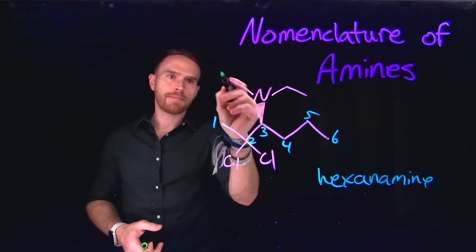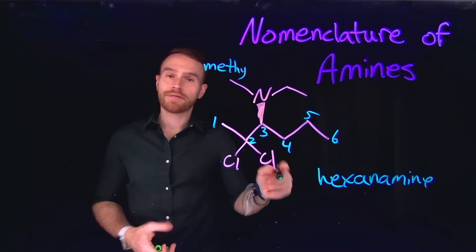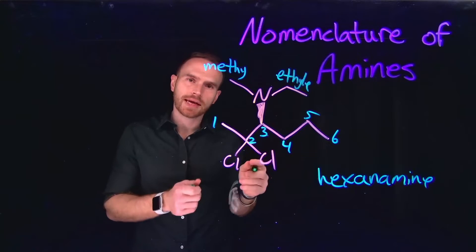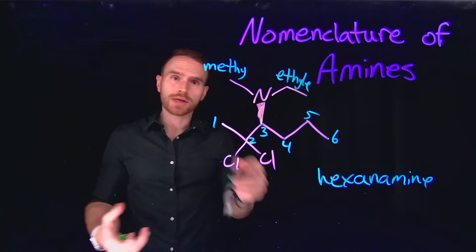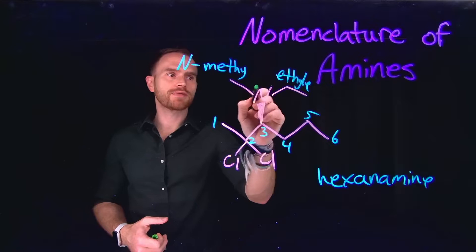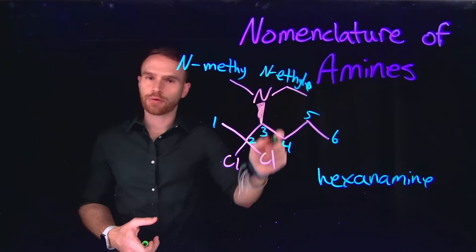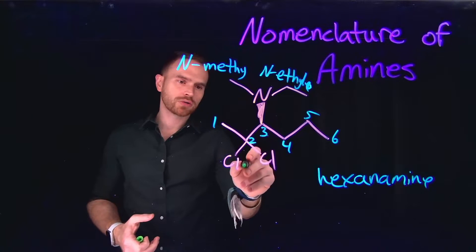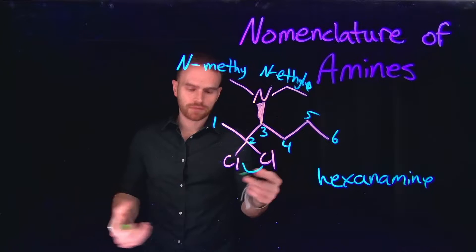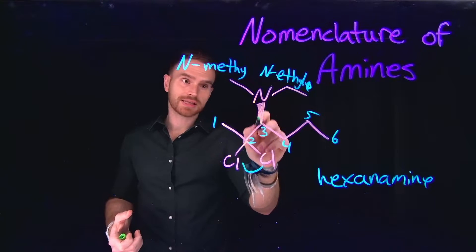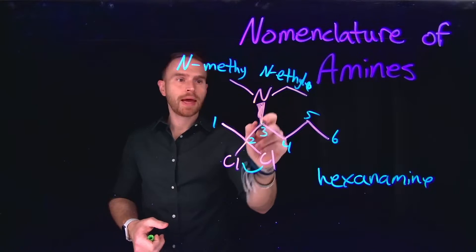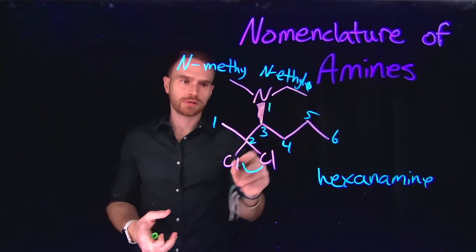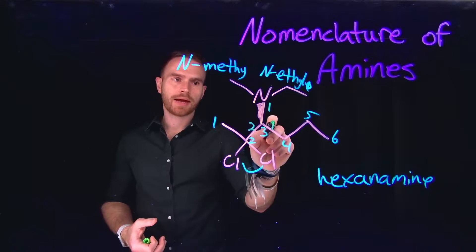The next thing I see is that I have a methyl group attached to the nitrogen, and also an ethyl group. Importantly, these substituents could have existed on any of the alkyl chains, so I need to indicate that they are attached to the nitrogen atom. We do that by placing a capital N with a dash in front of each one. So N-methyl and N-ethyl means both of those alkyl substituents are coming off the nitrogen atom. I also see a dichloro group at the 2 position. Finally, there is stereochemistry — a wedge indicating it's coming out toward you — which gets the primary distinction when determining R or S.